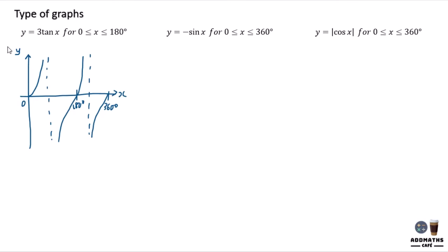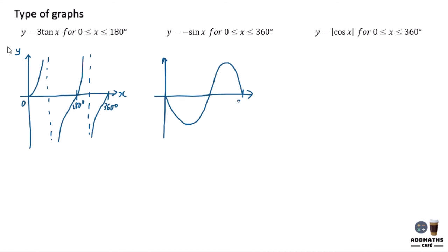Now you are required to sketch y equal to minus sin x. Minus means the whole graph will be reversed. Starting from 0, it goes down first and then goes on. So this is your negative sin x. This is 360 degrees and the middle will be 180 degrees. This is 0, maximum of 1, and minimum of negative 1. Add x label.